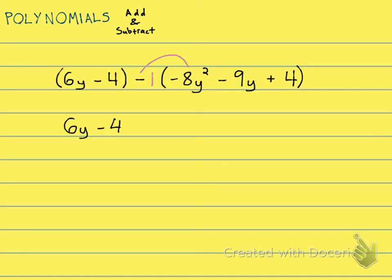So negative 1 times negative 8y squared—negative times negative is a positive 8y squared. Then we have negative times negative, which is going to be positive 9y. Then we have negative 1 times 4, and that is minus 4. That's the most common mistake I see right there—students forgetting the minus.